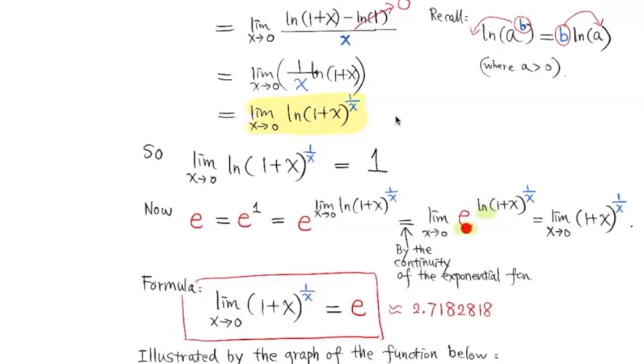Remember, the exponential function with base e and the log function with base e are inverse functions. When you compose them, they will cancel out and give you back 1 plus x to the 1 over x power. Now we have just discovered that e is this limit of 1 plus x to the 1 over x exponent as x approaches 0.